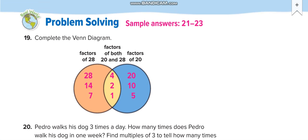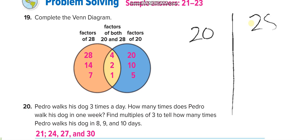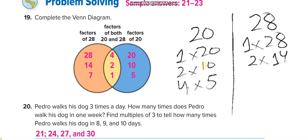On the next page, complete the Venn diagram. On one side write the factors of 28, on the other side factors of 20, and in the middle the common ones. First, find the factors of 20: 1×20, 2×10, and 4×5. For 28: 1×28 and 2×14.